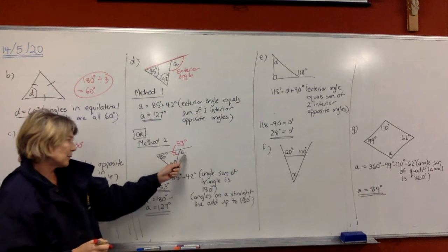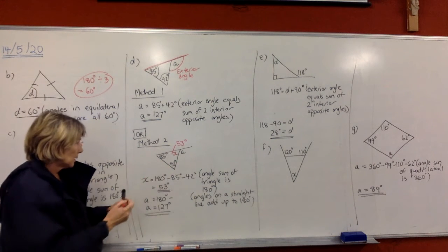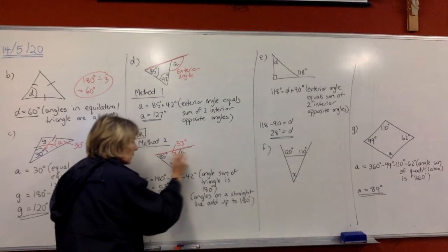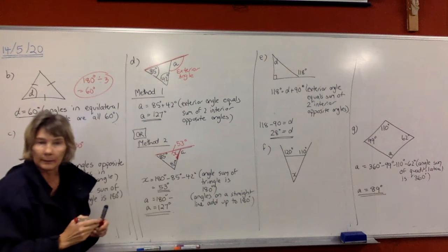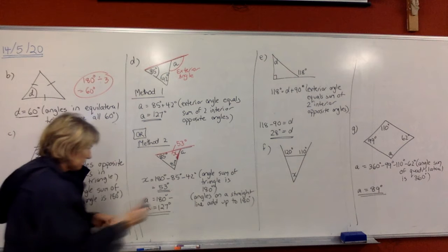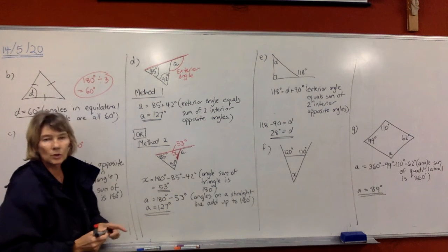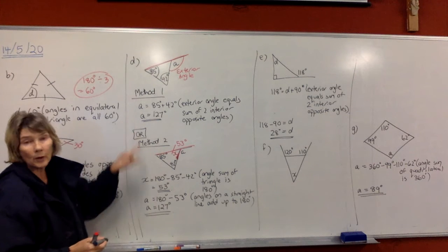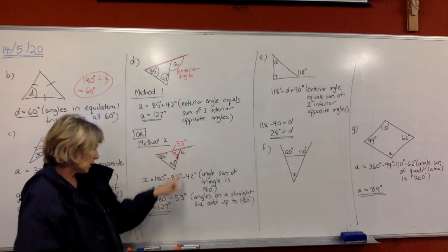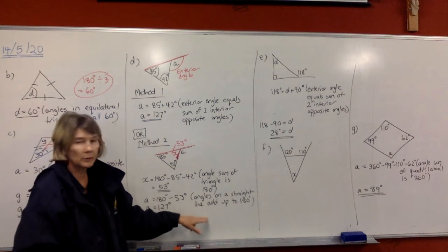Then you can find A, which is next to the 53 on that straight line. Use angles on a straight line: to get A, do 180 take away 53, which gives 127 — the same answer as before. Write your reason: angles on a straight line add up to 180.